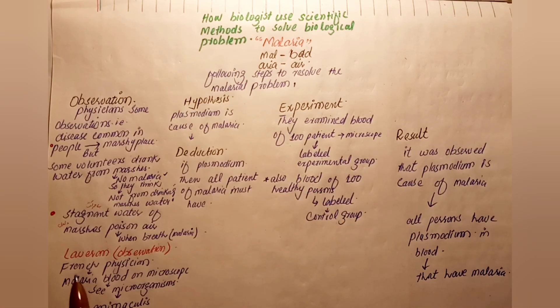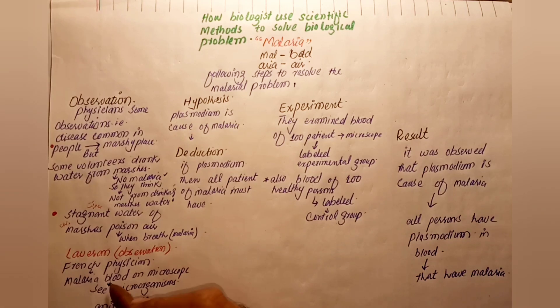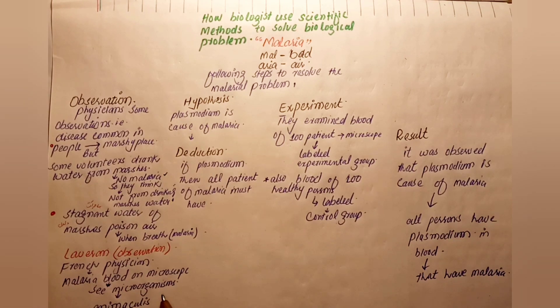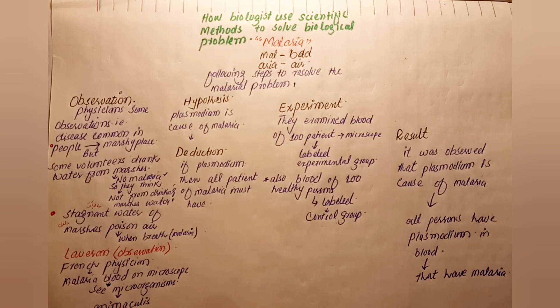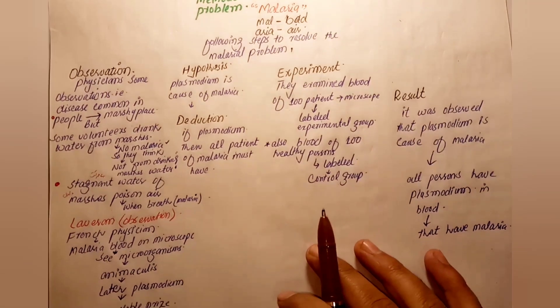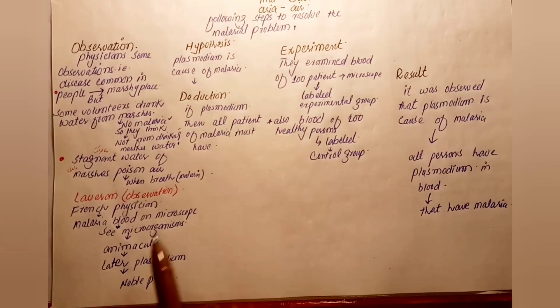A French physician made further observations. He studied malaria patients' blood under a microscope and discovered a microscopic organism. This organism was found in the blood, which he observed through microscopic examination.